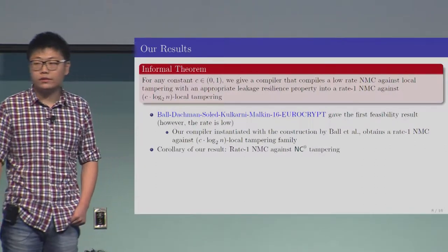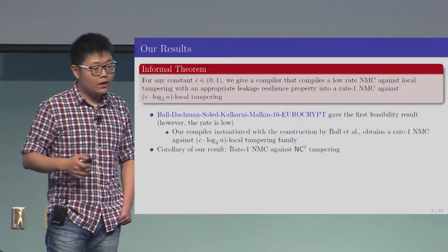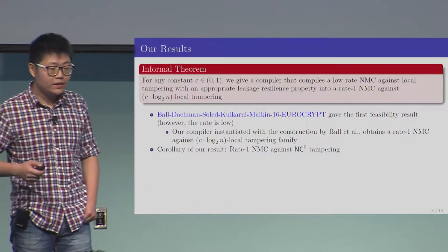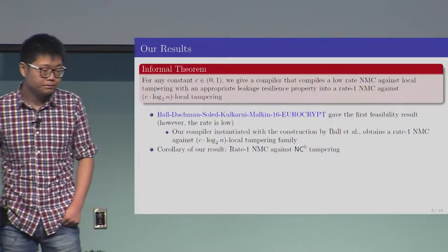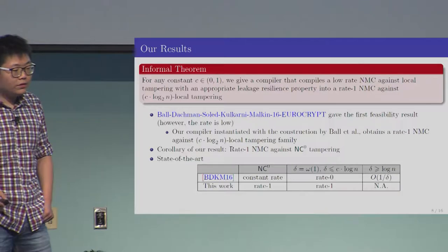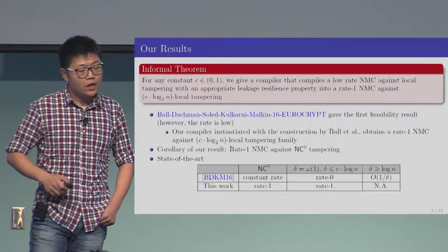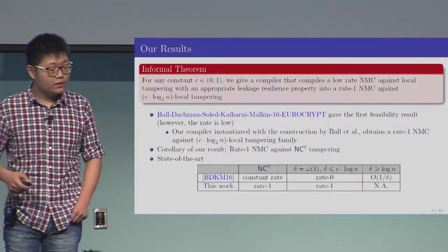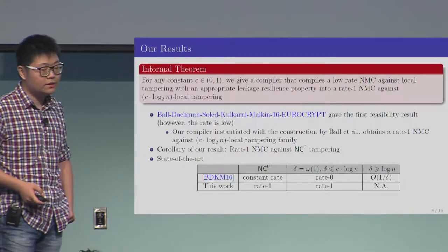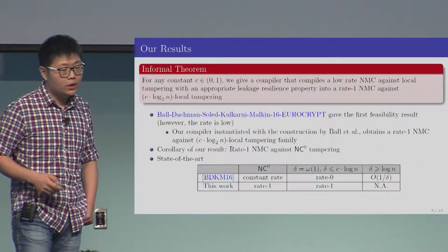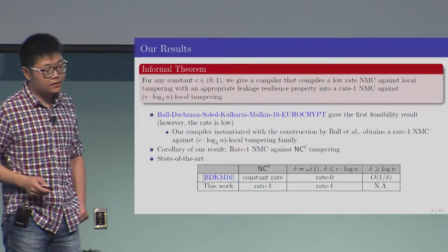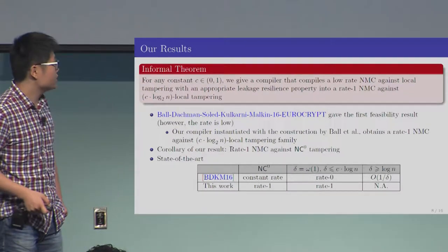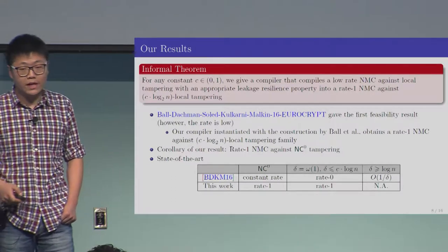Ball et al. gives the first feasibility result of non-malleable code against local tampering. Our compiler, instantiated with Ball et al.'s construction, gives us a rate 1 non-malleable code against C times log n local tampering. As a corollary of our results, we obtain a rate 1 non-malleable code against NC0 tampering, because NC0 tampering is all tampering with constant locality. When the locality is constant (NC0 tampering), Ball et al.'s construction has constant rate, while our work has rate 1. When the locality goes beyond constant but below our threshold, Ball et al.'s construction has a decaying rate, while our work still has rate 1.